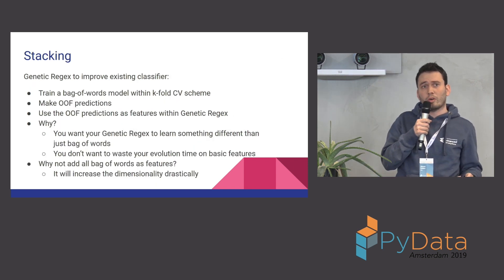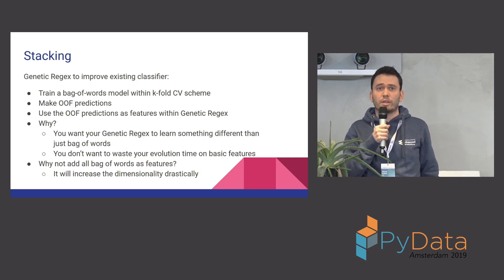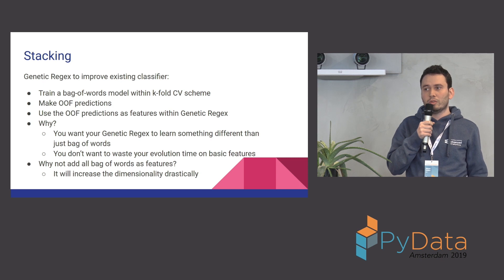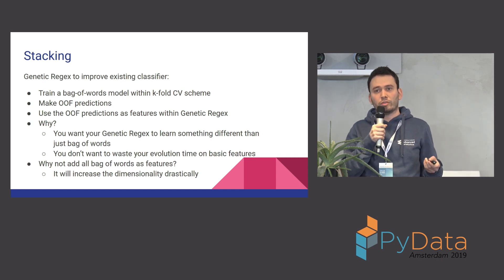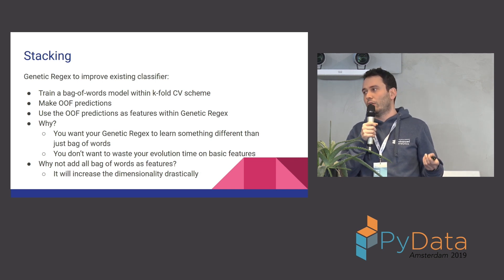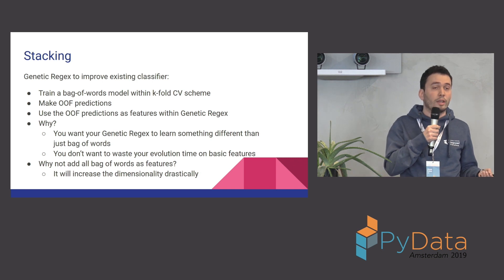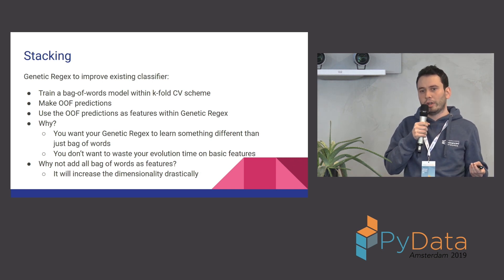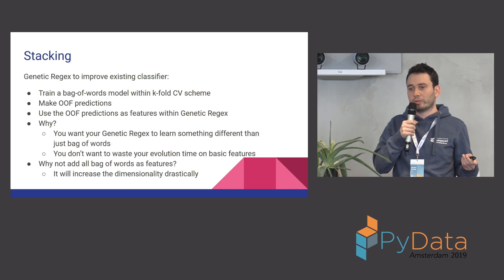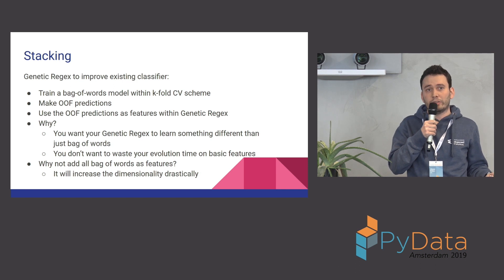Another thing we did on top of the current algorithm is stacking, because you want your genetic regex to learn something different than what you can learn with word n-grams, character n-grams, or another model. You also don't want to waste time on basic features — you don't want your regex to just learn a feature like 'holding' as a word, because you can get those much easier.